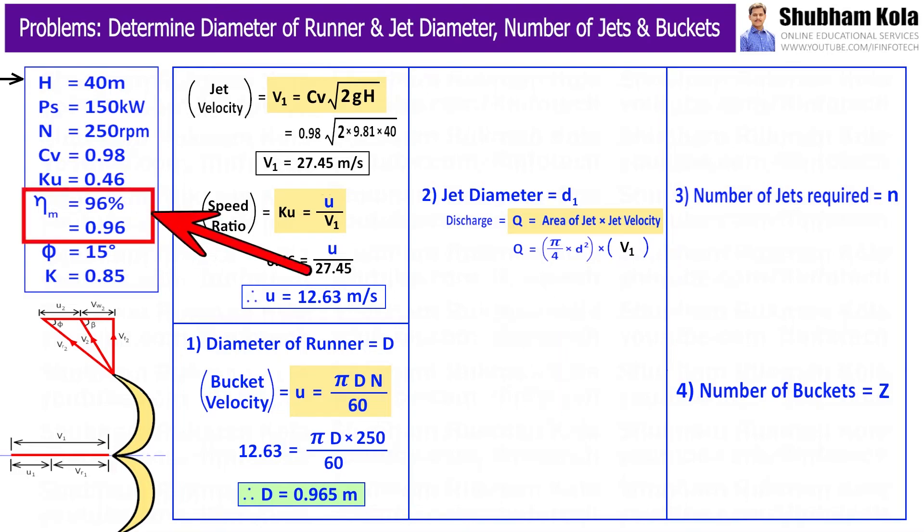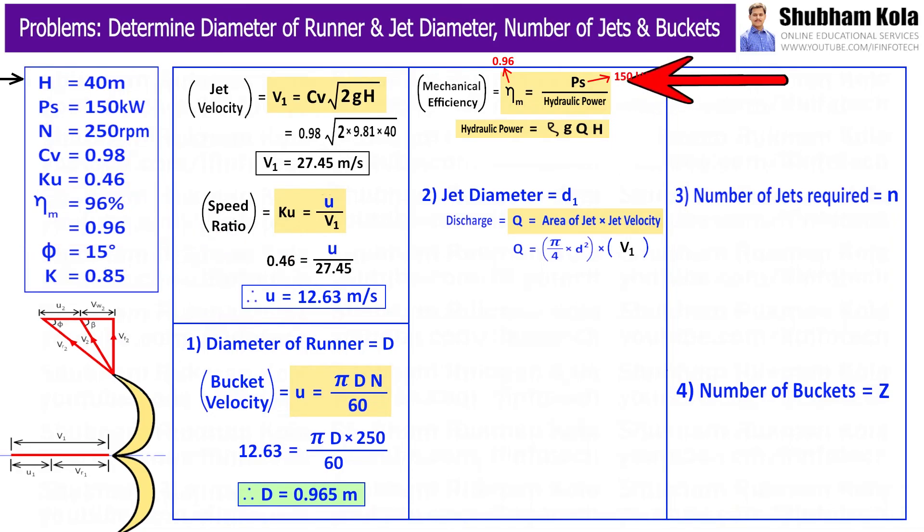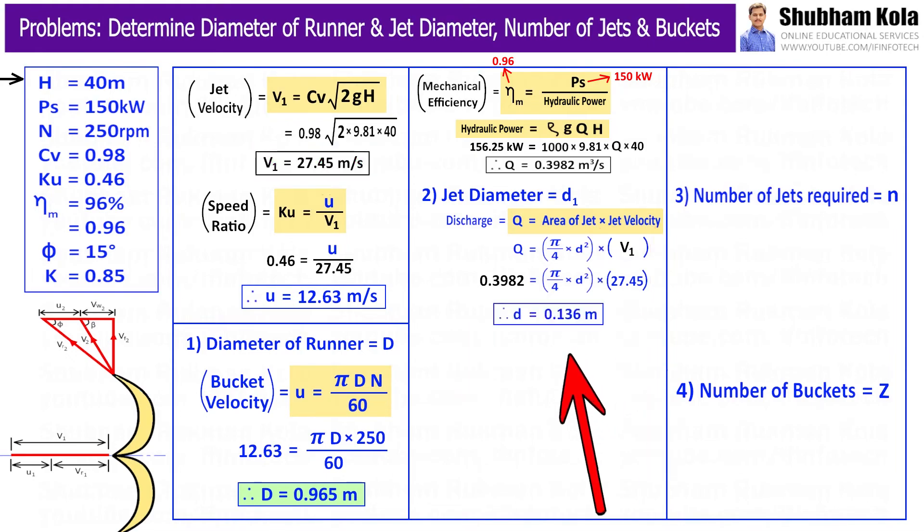Here we need to calculate discharge rate. In the problem, they have mentioned that the mechanical efficiency η is 96%, equal to 0.96, and it is given by formula η = output power / hydraulic power = Ps / (ρgQH). From here, I will calculate discharge rate Q as 0.3982 m³/s. With discharge and velocity of jet V1, we will get d at 0.136 meter. And with the help of d and D which we have calculated earlier, I will get value of jet ratio m as 7.1.